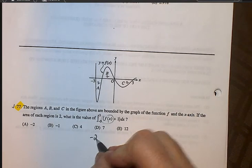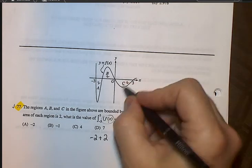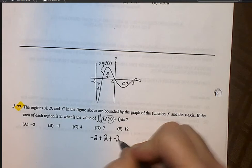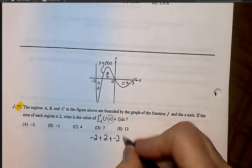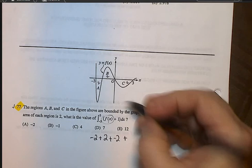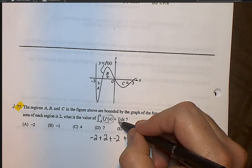Plus 2, which is B, minus or plus a negative 2, which is C because it's below. That's what we have so far. And then plus, that's this integrated. When we integrate 1, we get x.